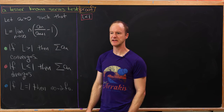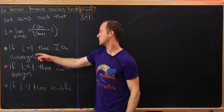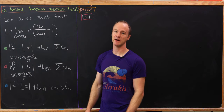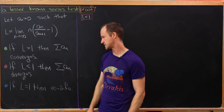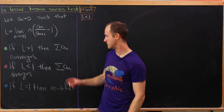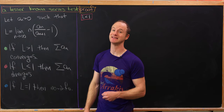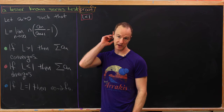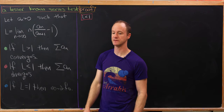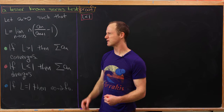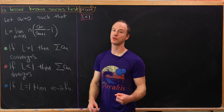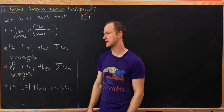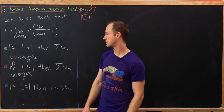Here are the conditions and results. If l is greater than one, then the series sum of a_n converges. If l is less than one, then the associated series diverges. And if l equals one, the test is inconclusive. After looking at a proof of one part of this theorem — Raabe's test — we'll look at an example.